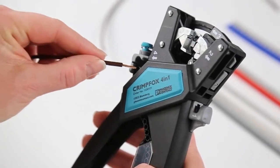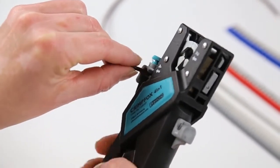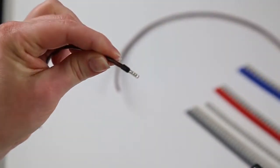Insert the stripped wire into the first ferrule. Push the ferrule strip up so the first ferrule sits in the crimping chamber. Squeeze the handles and remove the properly crimped ferrule.